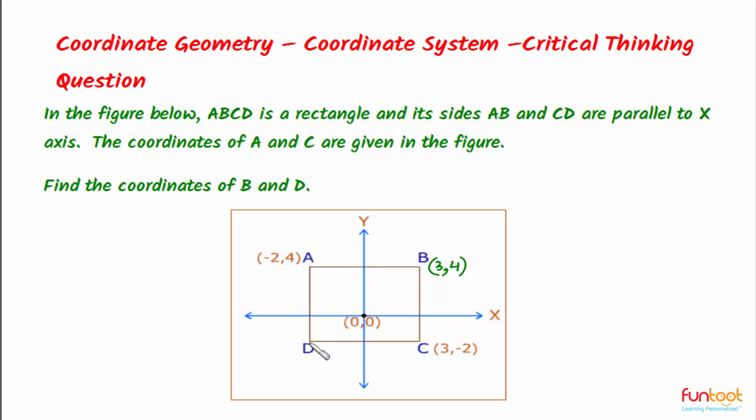Similarly, if we look at point D, we will make use of coordinates of A and C once again to find the coordinates of D. So AD is parallel to Y axis and along AD, the Y coordinate keeps on changing whereas the X coordinate remains constant. So X coordinate of D will be minus 2.